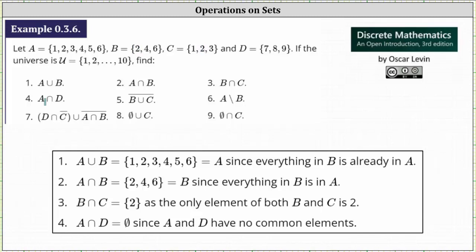Number four, we have A intersect D, which is the set containing the elements that are in both set A and set D. Set A contains the elements 1, 2, 3, 4, 5, 6, and set D contains the elements 7, 8, 9. There are no elements that are in both set A and set D, so A intersect D is equal to the empty set.